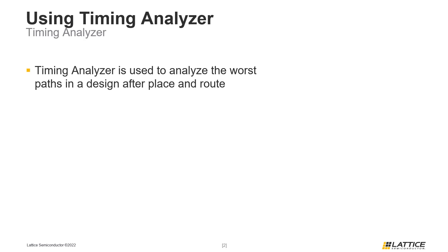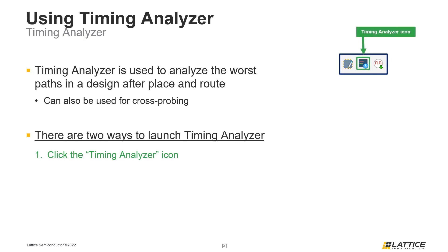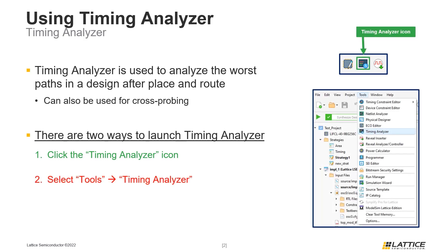There are two ways Radiant's Timing Analyzer tool can be launched. The first way is to select the Timing Analyzer icon from Radiant's toolbar. The second way is to select Tools from Radiant's menu bar and then Timing Analyzer from the list of options that appear. There are no differences between these two methods for launching the Timing Analyzer.